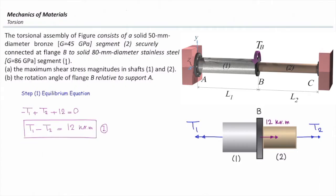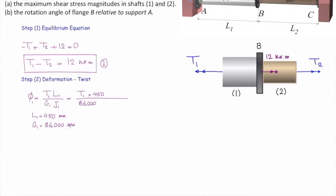In the second step, we write down twist as a function of torque. Phi1 is TL over GJ. We can plug the values. T1 is unknown. Length of the first element is 4,150 millimeter. G is 86 gigapascal, that should be converted into megapascal. And J, we can calculate that. J is pi over 32 diameter to the fourth. Phi1 will eventually summarize into this equation: T1 divided by 768 times 10 to the sixth. We have determined phi as a function of T, or twist as a function of torque. This is for the first element.